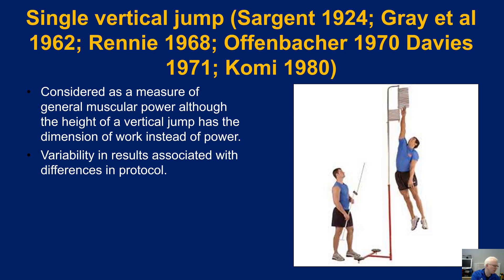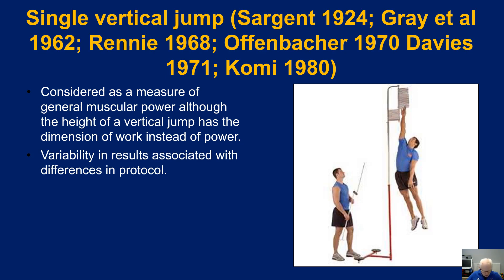In a vertical jump, the displacement of the center of mass is also affected by whether or not an arm swing is used. Typically participants want to use an arm swing because it feels natural to drive up during the jump, but the data shows that applying an arm swing makes results highly variable. The thing you cannot control is how much they swing the arms, and how much they swing the arms affects vertical displacement. It also affects horizontal displacement, because the arm swing causes people to lean into the jump and move horizontally rather than vertically.